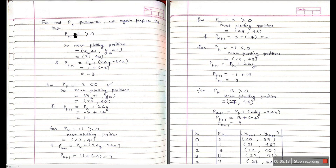Since P = 1 is not less than 0, we increment x and y both by 1: (20, 21) becomes (21, 40). The next decision parameter is 1 + (-4) = -3. Now Pk = -3, which is less than 0, so this time we increment only x by 1 and keep y constant.